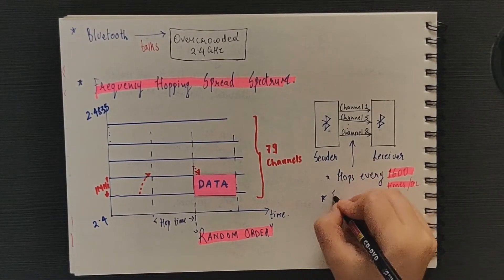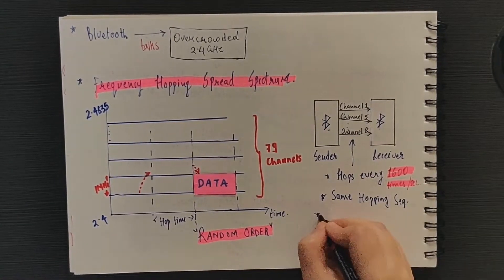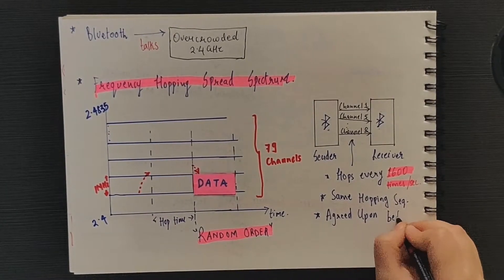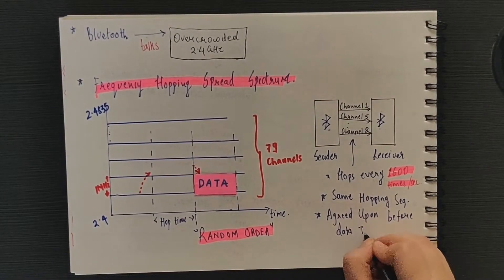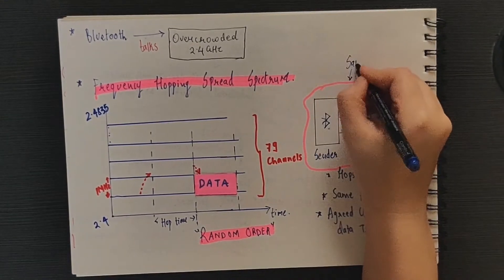Now of course, two Bluetooth devices that are supposed to communicate with each other should follow the same hopping sequence. And this is agreed upon before the data transfer. And due to this, they are always transmitting and receiving using the same sequence, or they are always on the same page.